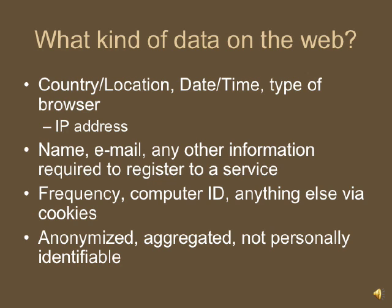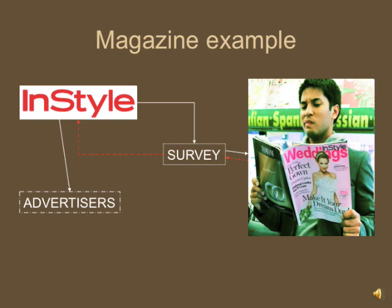Why does this practice stir privacy issues? To understand the potential privacy issues that have arisen with the internet, it helps to see how other media have obtained and processed audience data. For example, a magazine distributes a survey filled out by a reader about his reading habits, likes and dislikes, and other pertinent information. The survey gets collated and interpreted, and then shown to advertisers, who can decide whether the magazine's audience is their target audience and whether the cost of advertising can be substantiated.